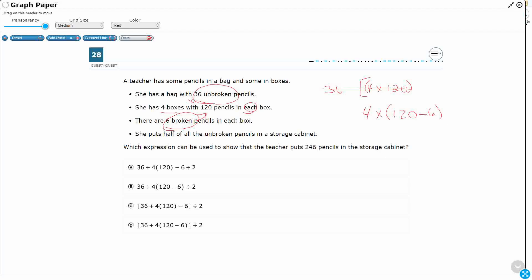So we've got half of the unbroken pencils. Well, this 36, right? That's the unbroken pencil. So we've got this 36, plus all of this mess. That's going to get you your unbroken pencils, because we don't want these broken pencils. So let's see. Do I have anything that even looks like this?